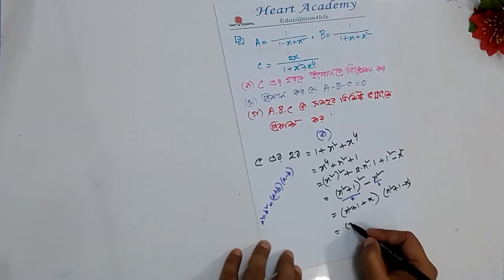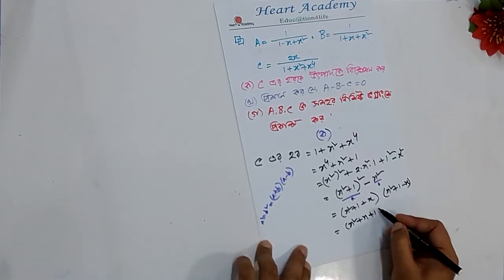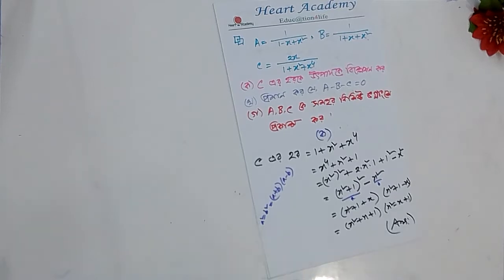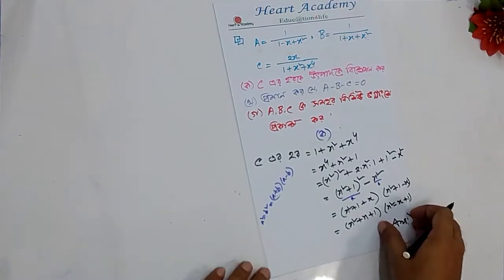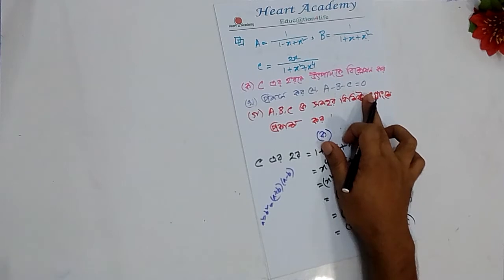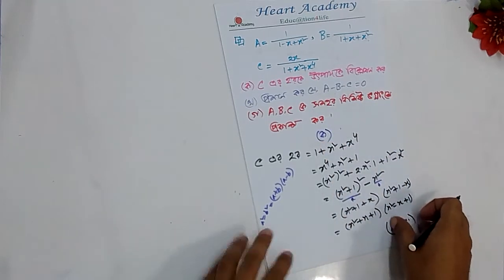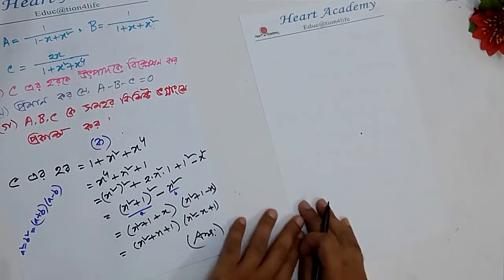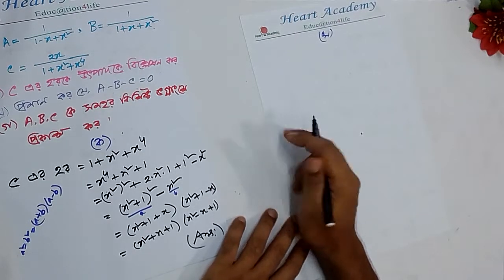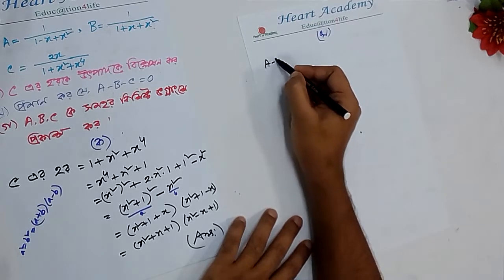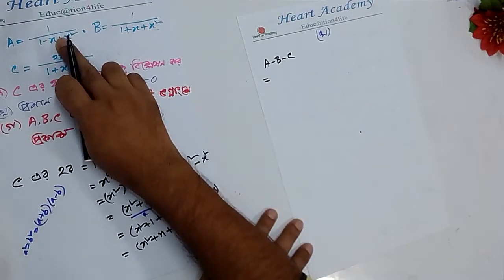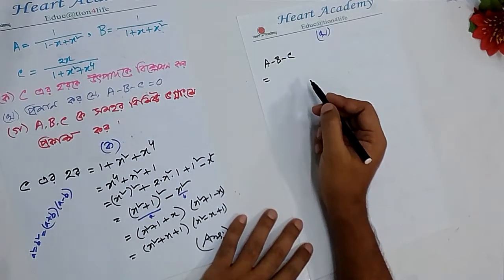So we have to write x²+x+1 and x²-x+1. We have to write the answer. We have to write: a minus b minus c is equal to 0; a plus b minus c is equal to 0. A minus b minus c, a minus b minus c — I am going to read it. So here we go.